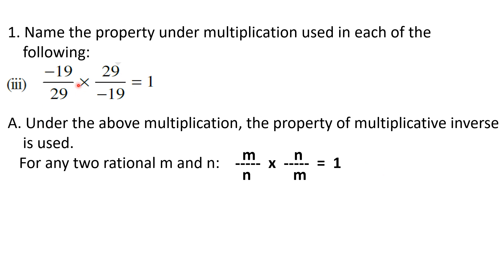Part 3: minus 19 upon 29 into 29 upon minus 19 is equal to 1. The answer is: the property of multiplicative inverse is used. For any 2 rational numbers m and n, m upon n into n upon m is equal to 1. In other words, these 2 numbers are reciprocals of each other, or multiplicative inverses of each other. Whenever you multiply a number with its multiplicative inverse, the result is always 1. Always remember this.